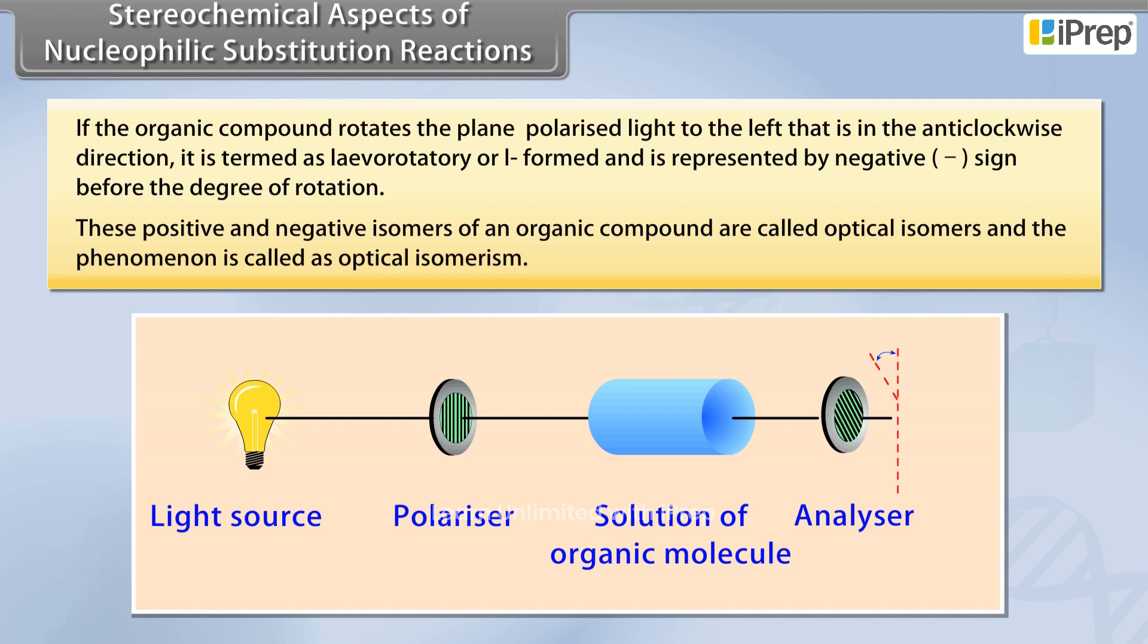These positive and negative isomers of an organic compound are called optical isomers and the phenomenon is called optical isomerism.